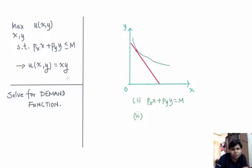If you want to differentiate this particular expression of utility with respect to x, you're going to get y. So that's marginal utility of x. And what is marginal utility of y? That's x. This should be equal to the slope of the budget line. What is the slope of the budget line? It's px by py.